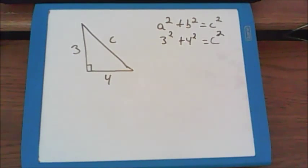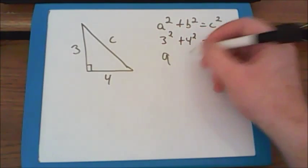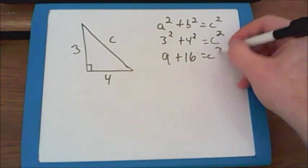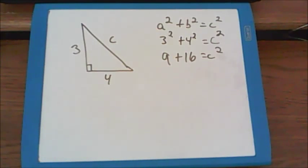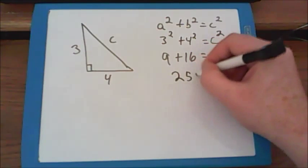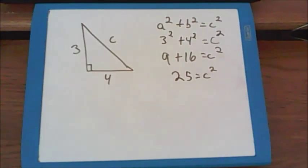We can go ahead and start to square some of these numbers. Remember that squaring a number is just taking a number and multiplying it times itself. So three squared is nine. Four squared is sixteen. And we don't know what c is, so we can't square that, so we have to just bring it along. Now we can add nine plus sixteen. That gets us to twenty-five. And twenty-five equals c squared.